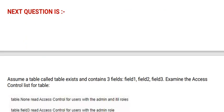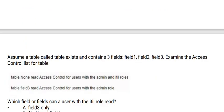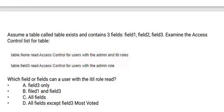Next question: Assume a table called TableExists that contains three fields — Field 1, Field 2, and Field 3. Examine the access control list for the table. Please go through the list. Which field or fields can a user with the it-ill role read?